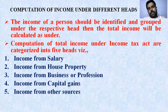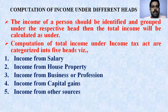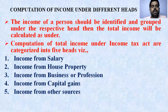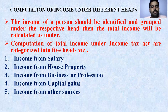The next point is computation of income under different heads. The income of a person should be identified and grouped under the respective head, then the total income will be calculated. Nowadays most people do different types of activities to earn more income, and all these incomes are put together for the total income. Under the Income Tax Act, incomes are categorized into five heads: income from salary, income from house property, income from business or profession, income from capital gains, and income from other sources.